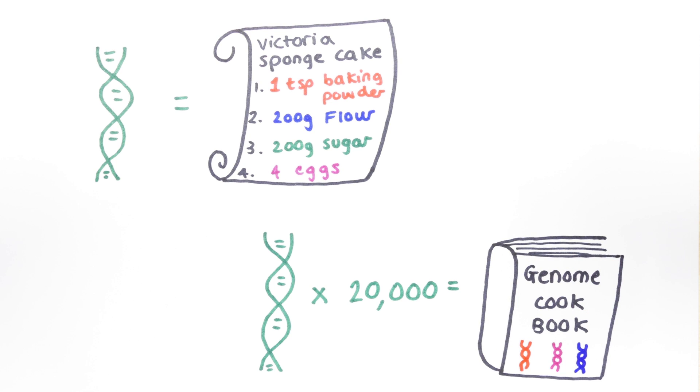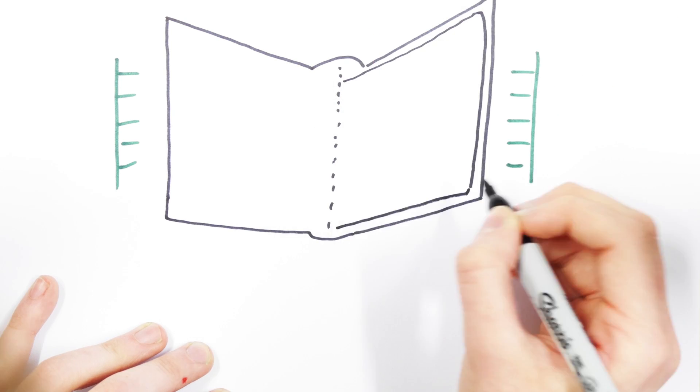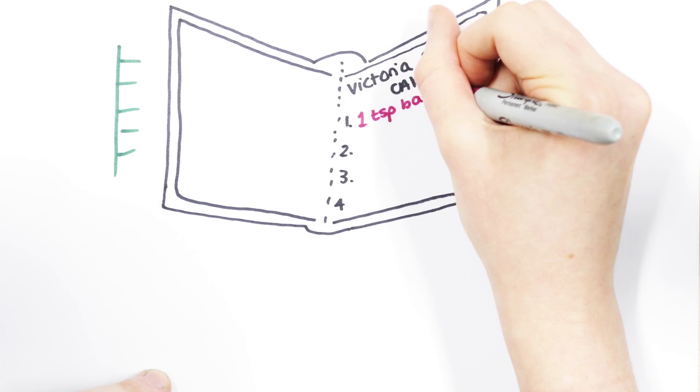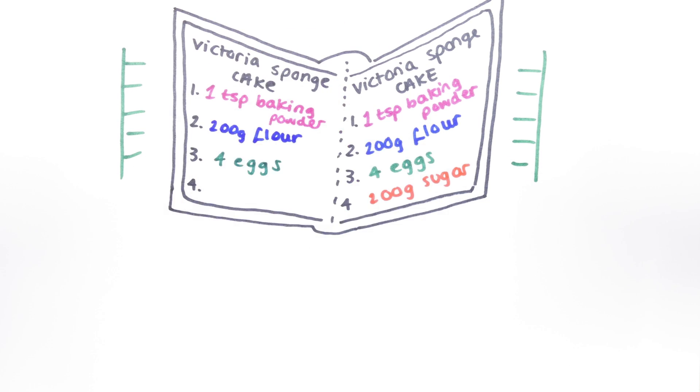DNA is a double-stranded molecule with mirror image instructions written into each strand. Which is a bit like having a recipe book where every recipe is written twice. This helps the cell make sure there is no mistakes in the recipe.